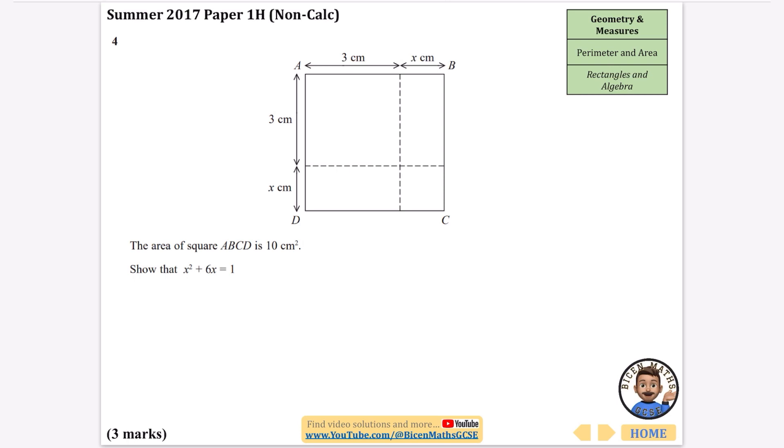This time it's blended with some algebra, but fundamentally it's still an area question. The area of square ABCD is 10 centimeters squared. Show that x squared plus 6x equals 1. This first section is 3 times 3 which is 9, this next section is x times 3 which is 3x.